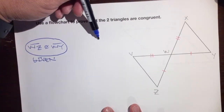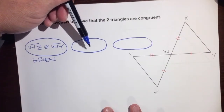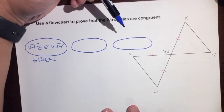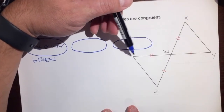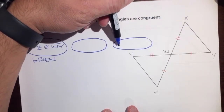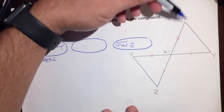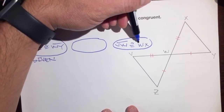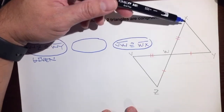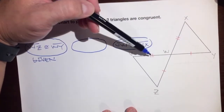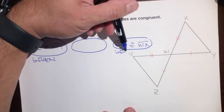Let's put another bubble here. They also give us two tick marks here and two tick marks here, so VW is congruent to WX. Two tick marks and two tick marks means they're both the same length — this could be seven feet and this could be seven feet. And the reason? Given, because those tick marks are already there.